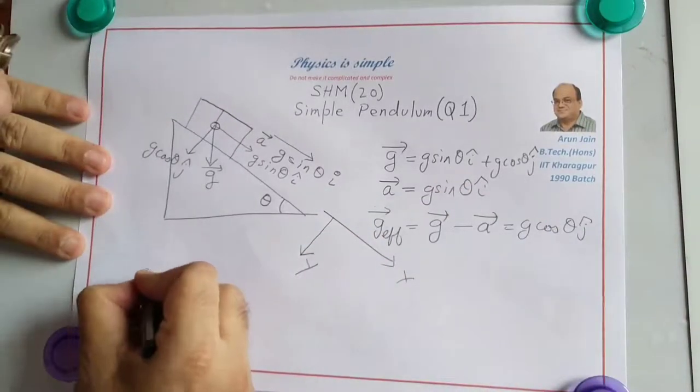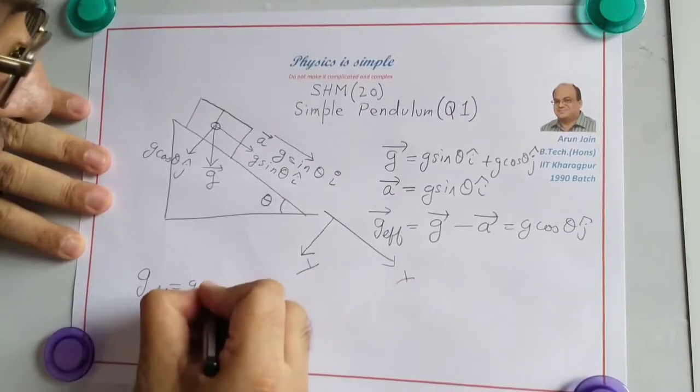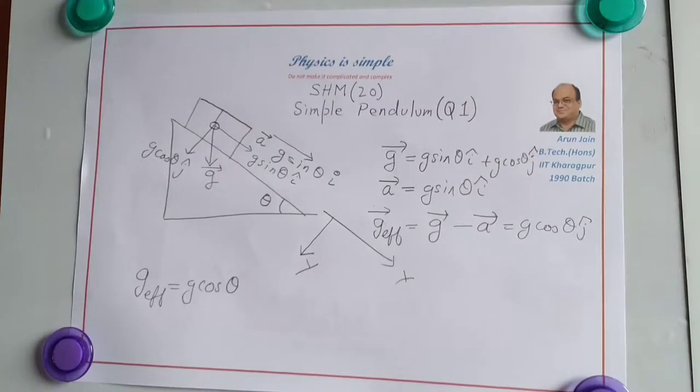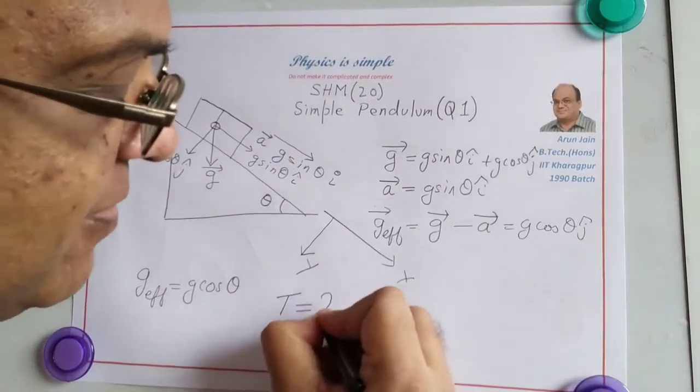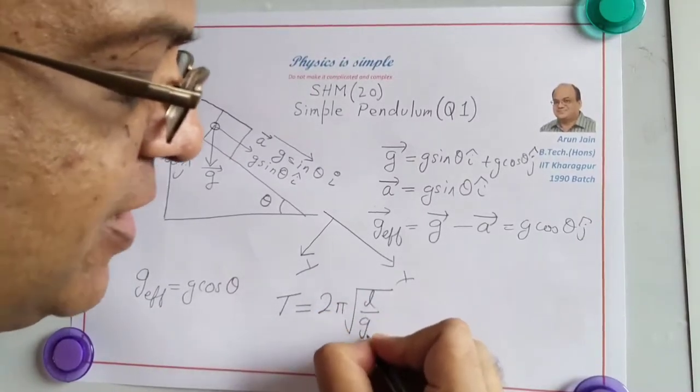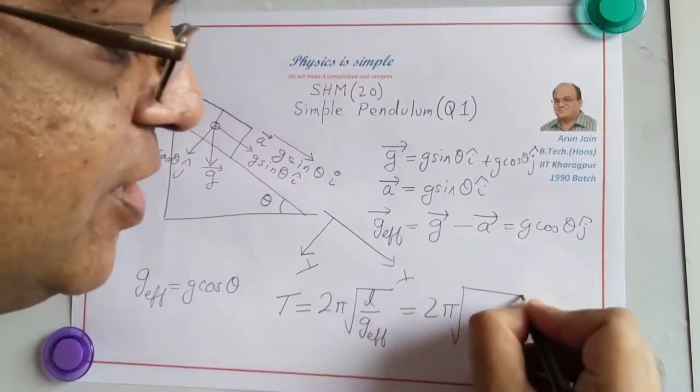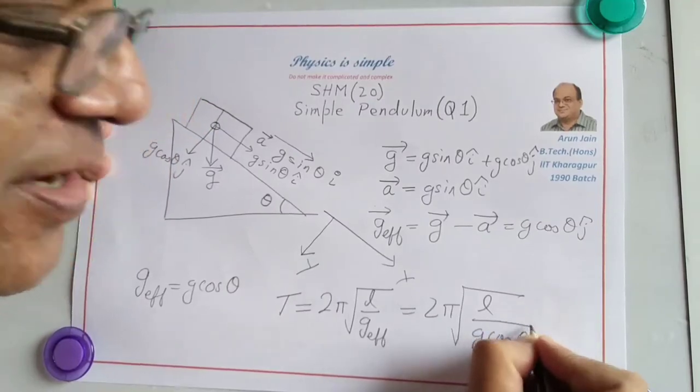Therefore the magnitude of G effective is G cos theta in that direction. Time period of a simple pendulum is given by 2 pi root over L by G effective. G effective is G cos theta, so 2 pi root over L by G cos theta is the answer.